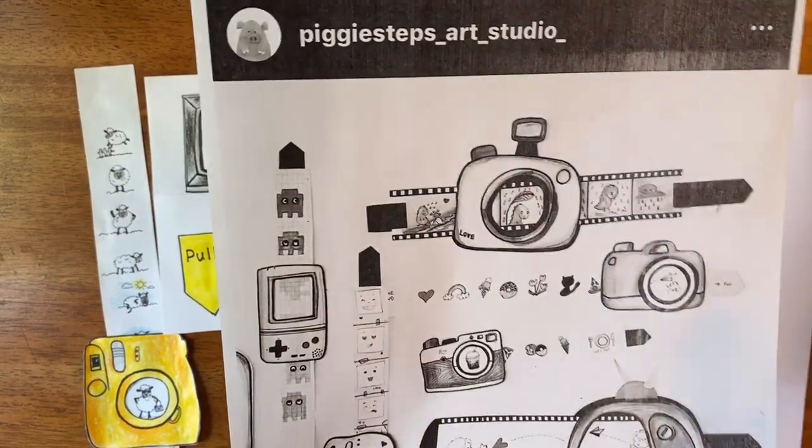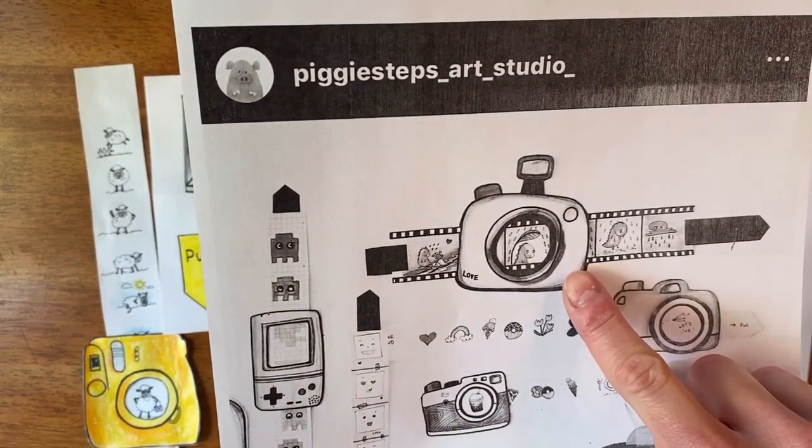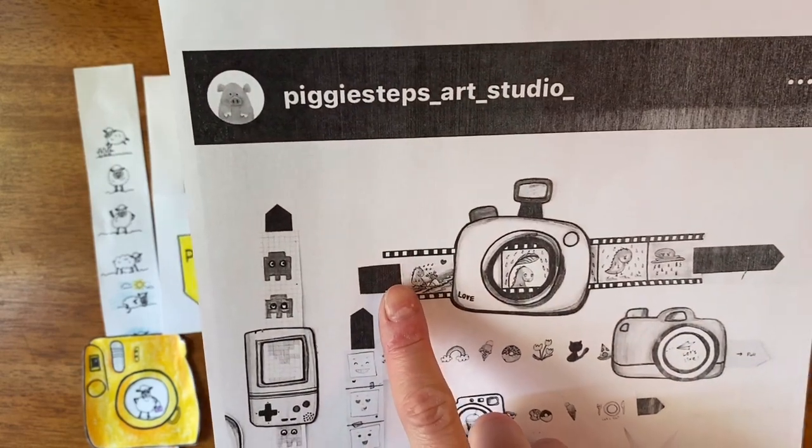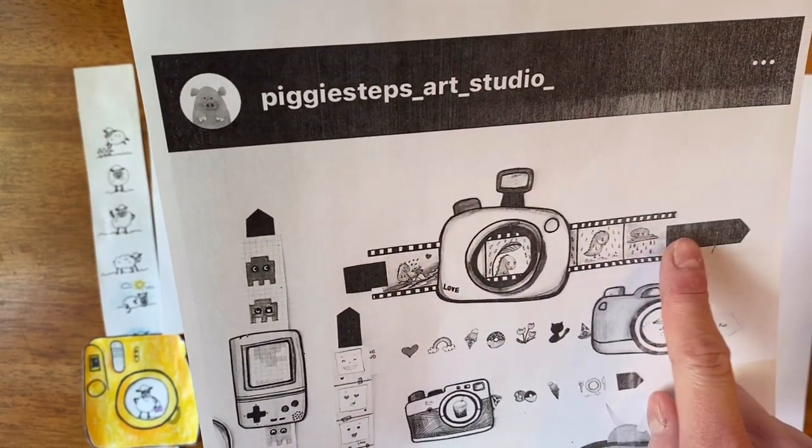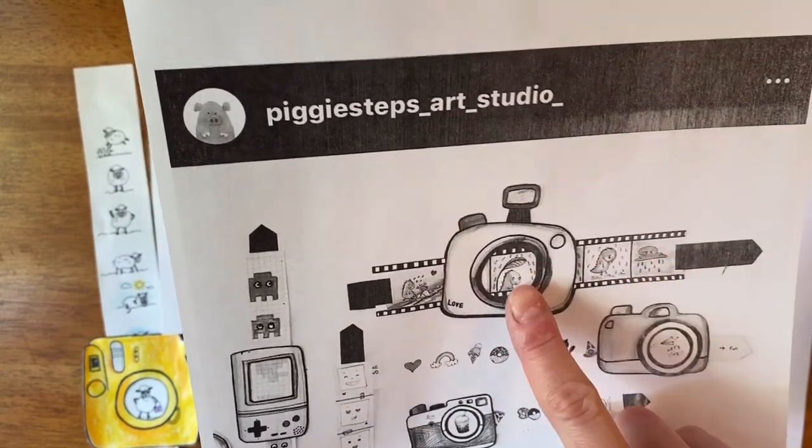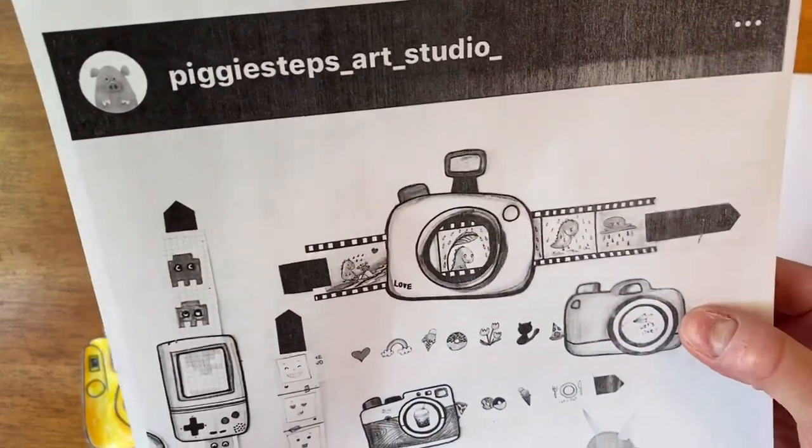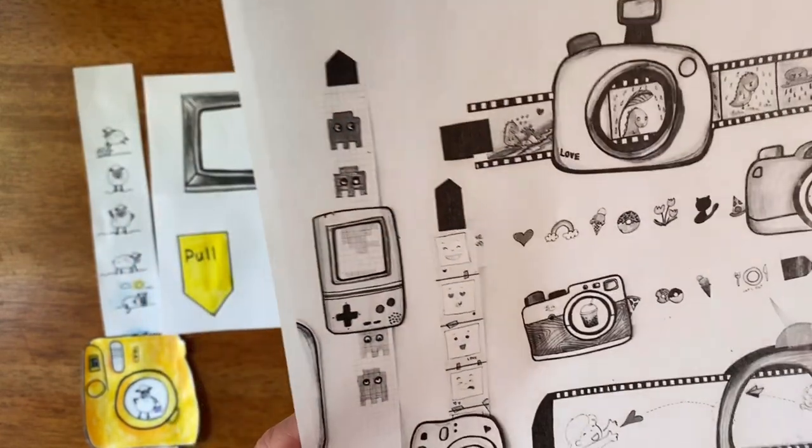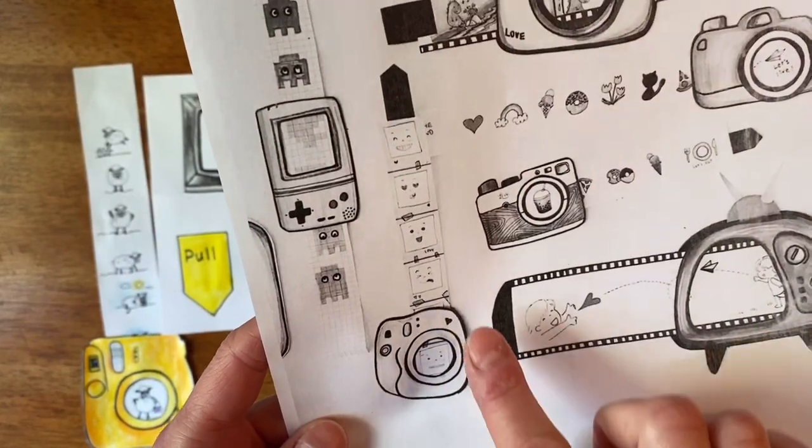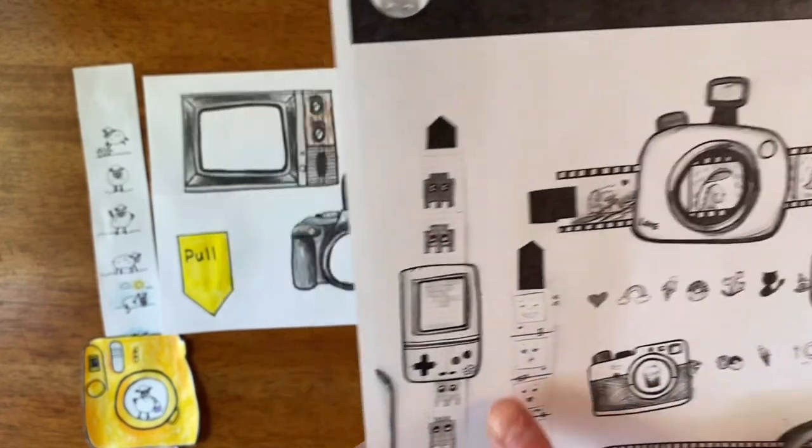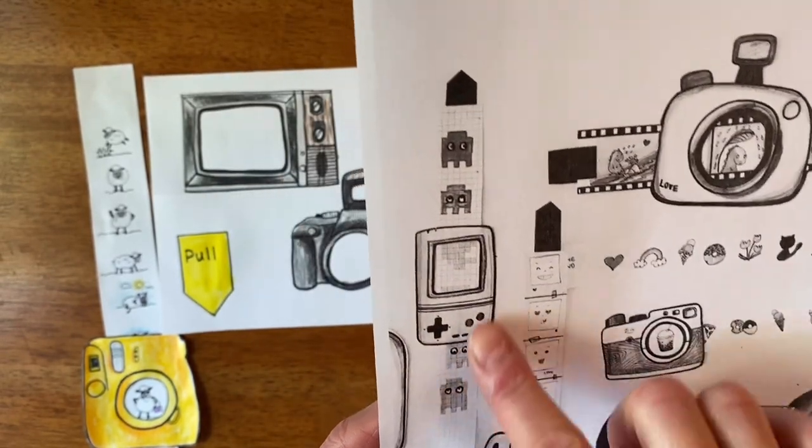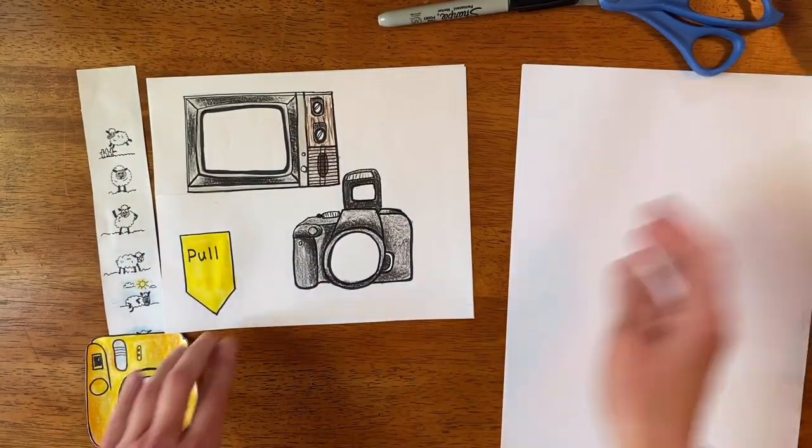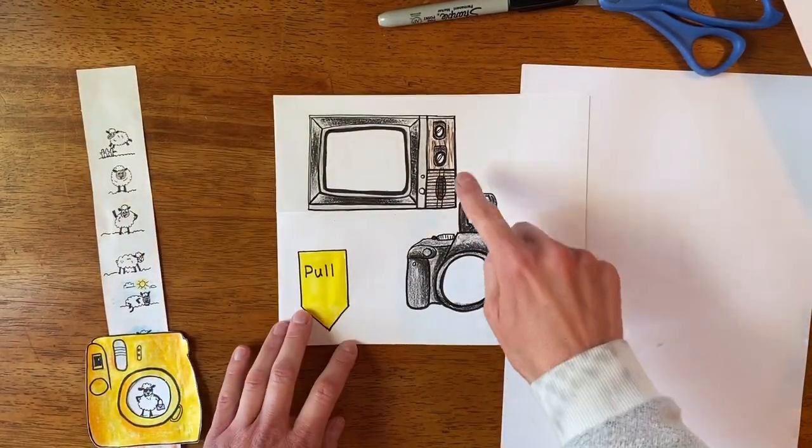This camera here is super fun. It has the little flash on the top, and then how it's going to work, there's going to be a little strip that runs through that you can pull to make the pictures appear in the center of the camera. There's different types of cameras, different images you can draw. You can even do a little Polaroid if you want, with the little Polaroid pictures coming out, a video game, even the TV is fun.